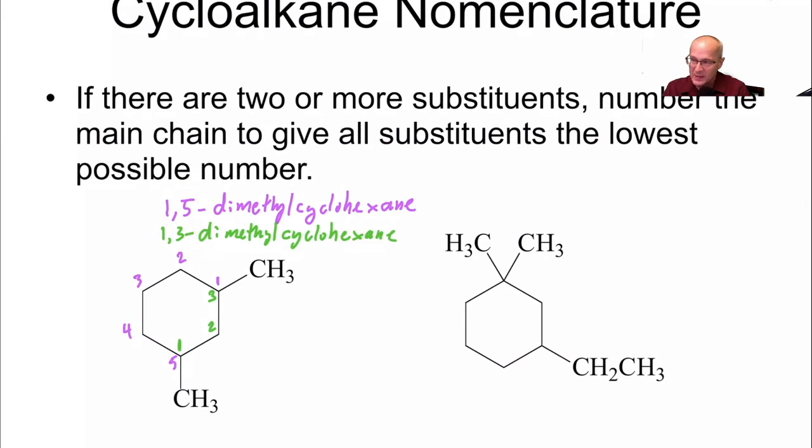Now, what you do is you look to see which one has the lower numbers. Now, they both are describing the same thing. They're describing this, but this is incorrect. Why is it incorrect? Because the numbers are bigger. This one has the smaller numbers. It is correct. Remember, you always want to have the lowest numbers.